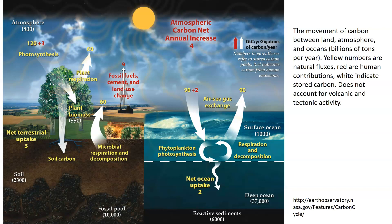Looking at the ocean part, phytoplankton and photosynthesis account for 90 gigatons coming in. Respiration and decomposition release another 90, so you get about the same amount coming in as going out. There is a net human activity contribution of two, giving a net uptake of about two. The surface of the ocean has a rather massive amount of biomass in the form of plankton, which are responsible for a pool of about 1,000 gigatons.